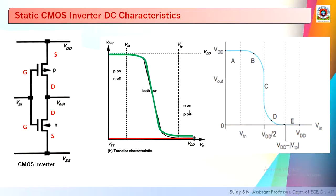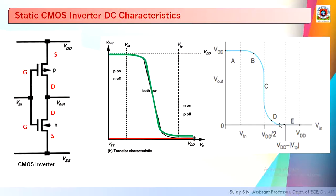The transfer characteristics can be divided into five regions: A, B, C, D, and E. Region A spans 0 to VTN where output is nearly constant. Region B extends from VTN to VDD/2. Region C is exactly at VDD/2, representing the switching point. Region D spans from VDD/2 to VDD minus VTP (threshold voltage of the P transistor). Region E extends from VDD minus VTP up to VDD.